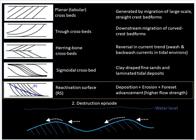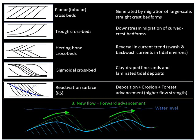This is not saying the current has changed direction — only that the dominant direction weakened and what was previously non-dominant became effective in eroding part of what had been deposited. In the third cycle, energy picks up again with a new flow, and the foreset planes, shown here as the green lines, advance. This gives you an erosional surface separating the first set of crossbeds dipping left to right, and then another set dipping in the same direction but truncated at the reactivation surface.